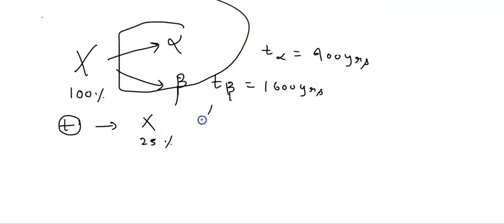As we know, the expression is 1 upon t is equal to 1 upon t1 plus 1 upon t2. So 1 upon t equals 1 upon t1 plus 1 upon t2. What is this formula?